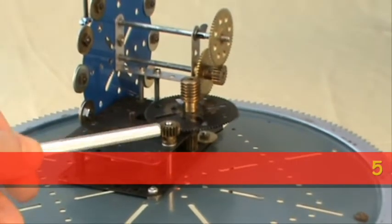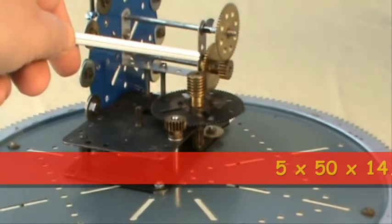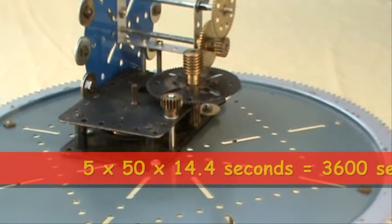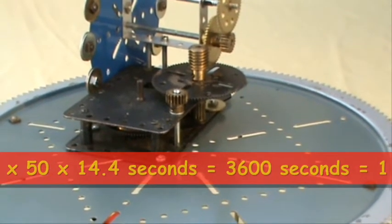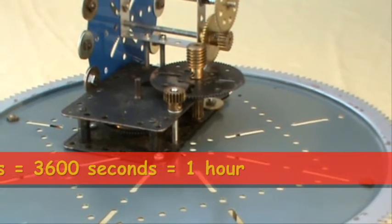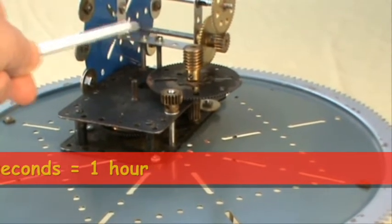The gearing here, 5 to 1 and 50 to 1, reduce the speed by a factor of 250. So it will take 3600 seconds for this shaft to turn, exactly 1 hour.